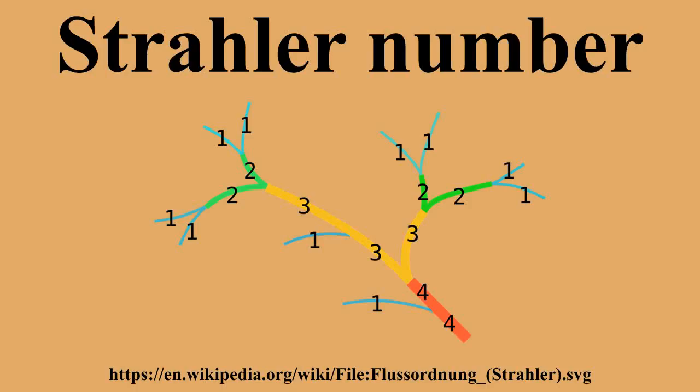Any node with Strahler number i must have at least two descendants with Strahler number i-1, at least four descendants with Strahler number i-2, etc., and at least 2^(i-1) leaf descendants. Therefore, in a tree with n nodes, the largest possible Strahler number is log₂(n) + 1. However, unless the tree forms a complete binary tree, its Strahler number will be less than this bound. In an n-node binary tree chosen uniformly at random among all possible binary trees, the expected index of the root is with high probability very close to log₄(n).